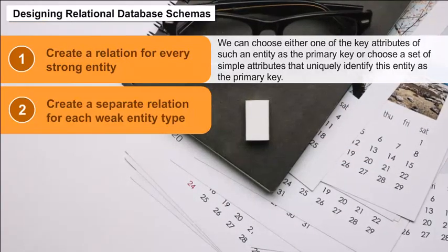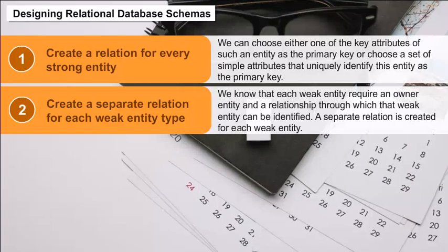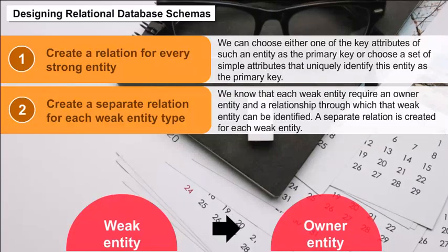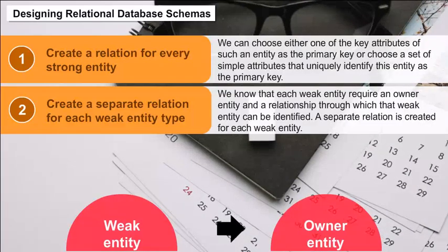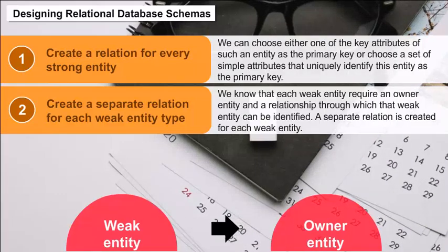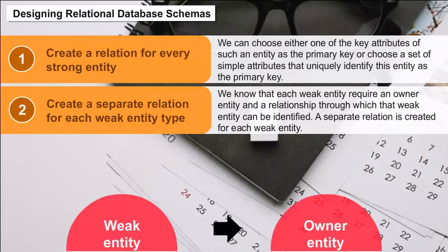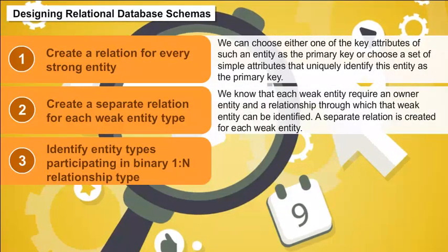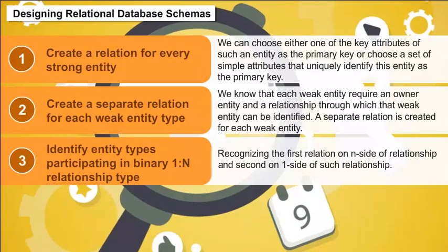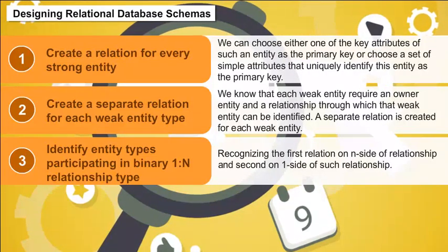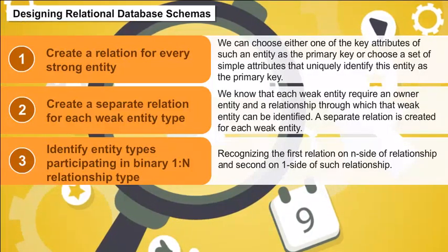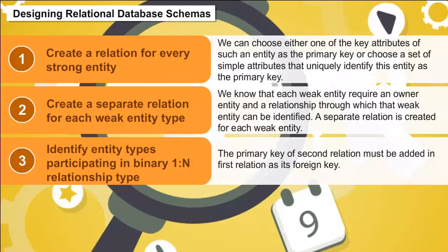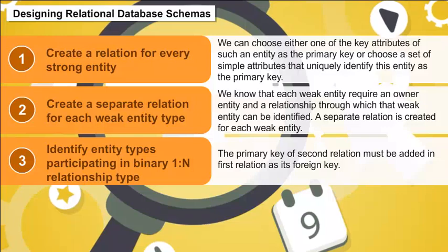2. Create a separate relation for each weak entity type — each weak entity requires an owner entity and a relationship through which it can be identified; a separate relation is created for each weak entity. 3. Identify entity types participating in binary one-to-many relationship type — the primary key of the relation on the one side of the relationship must be added in the relation on the many side as its foreign key.